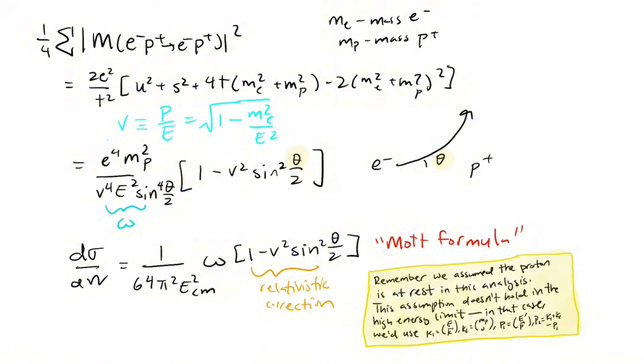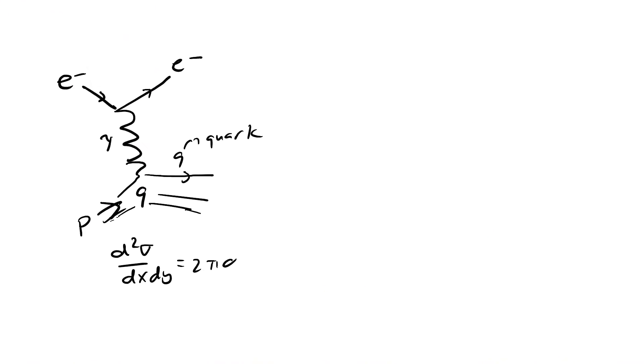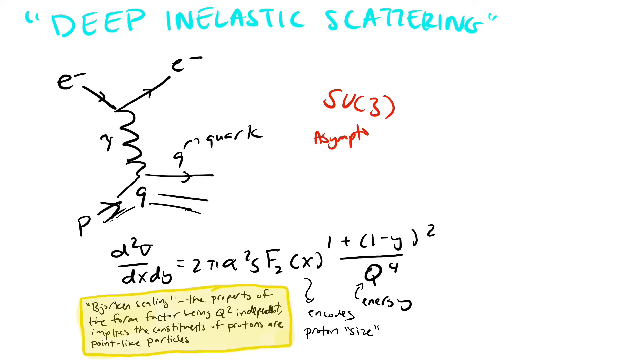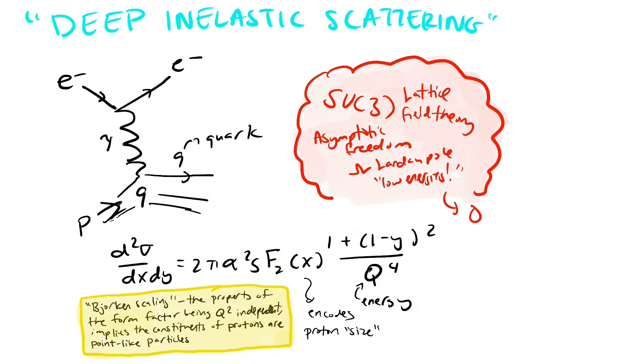It turns out that when you actually smash electrons with protons and measure the cross-section, there is a deviation from the value predicted with QED. This is a hint that protons may not actually be fundamental particles, but composed of other smaller particles. We'll calculate the corrections from elastic scattering when we get into quantum chromodynamics, the theory of quarks.